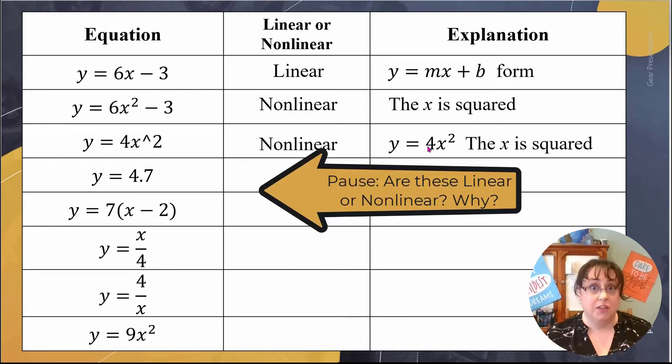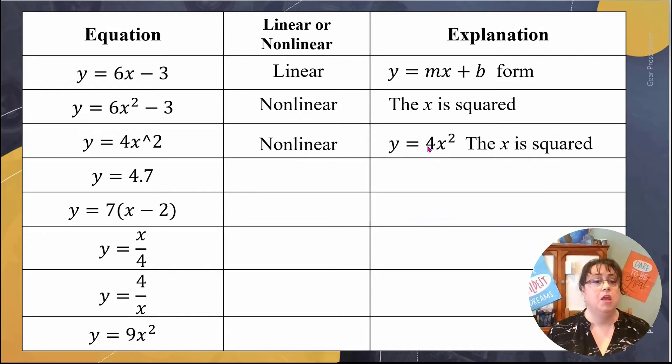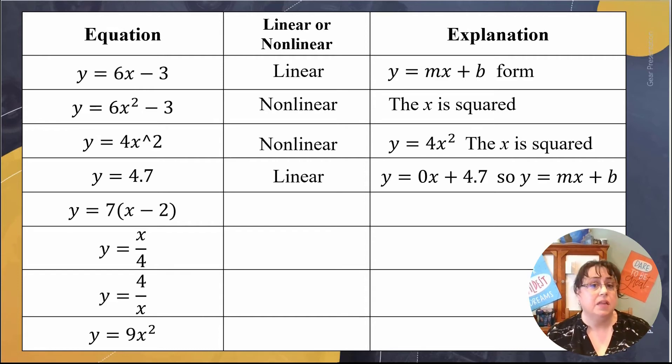The next two, I'd like you actually to look at yourself, and I want you to figure out: are these linear or nonlinear? You might need to rearrange it, you might need to do a little work, but you should be able to get to the correct answer. So y = 4.7. If we think about what that actually means, I don't see any exponents, but I also don't see a slope or m, and I don't see a y-intercept or b. But if I think about it, I don't have a slope, so that could be zero: y = 0x + 4.7. So it does follow the y = mx + b form, so it is linear.